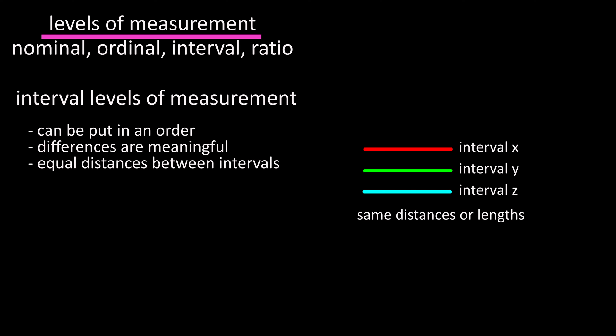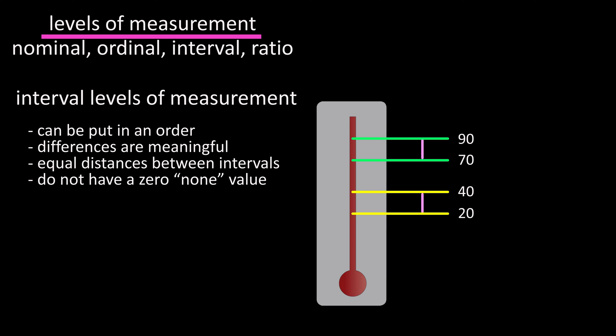Interval levels of measurement can be put in an order, and the differences between the data entries are meaningful, can be calculated, and have equal distances between the intervals on a scale, and a zero on the scale represents a position on the scale. It is not an inherent zero that implies none. For example, in temperature measurements, the distance between 20 degrees and 40 degrees is the same as the distance between 70 degrees and 90 degrees, and the zero on the scale represents a position on the scale.